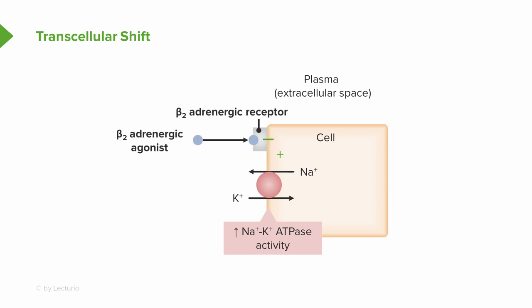We also have shift of potassium from ECF to ICF through beta-adrenergic agonists. Things like catecholamines, or drugs that act on beta-2 receptors such as terbutaline or albuterol, will increase potassium entry into the cell by increasing activity at the sodium-potassium ATPase.